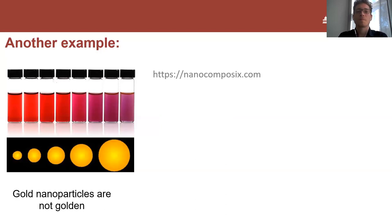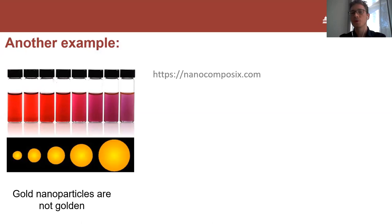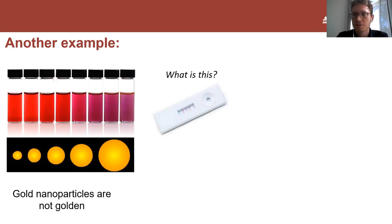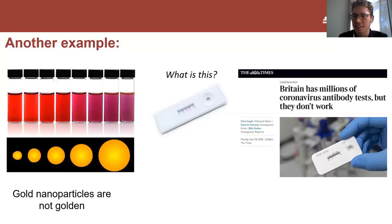Gold nanoparticles cannot be seen with our eye, but they do appear and they do have colors. They change colors with their size: if they're small, like 10 nanometers, they are reddish or even pink, and they start becoming purple or blue when they grow, agglomerate, or have different geometries. You might have seen gold nanoparticles before - for example in something like this: a lateral flow test. You might have seen them recently in the media - the UK bought quite a few coronavirus tests, which didn't work that well, but these are the kind of devices called lateral flow tests.